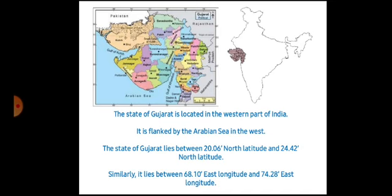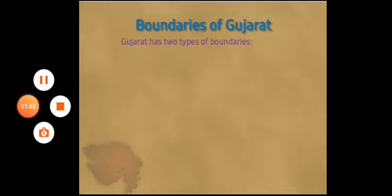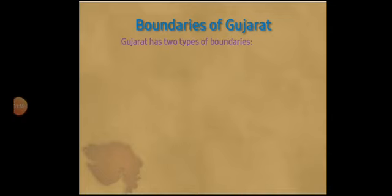Now we will study the boundaries of Gujarat. Gujarat has two types of boundaries: sea boundary and land boundary. Children, open the textbook page number 36. You can write down the land boundary and sea boundary — the blanks are given.